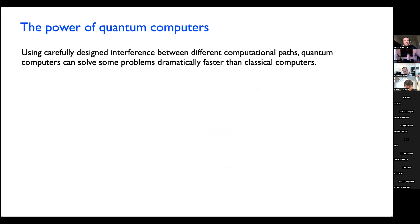The general question I'm really interested in, and that this talk is about, has to do with the power of quantum computers. What are quantum computers good at? How can we use them to solve problems faster than classical computers? If we design things in the right way and the problem has the right kind of structure, there are some problems we can solve a lot faster using quantum computers than classical ones, by exploiting the possibility of having interference among many different computational paths. That's the idea that got people excited about quantum computing.